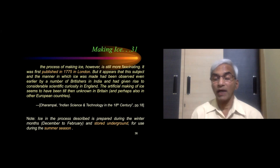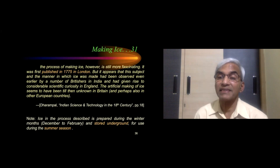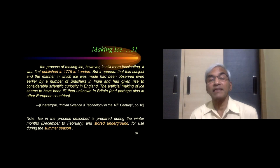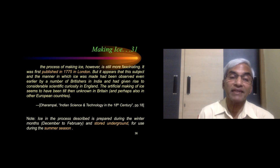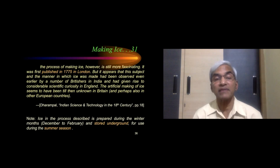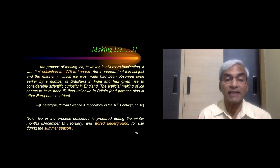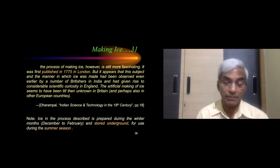About the process of making ice — which is still more fascinating — it was first published in 1775 in London, but it appears that this subject had been observed even earlier by a number of Britishers in India and had given rise to considerable scientific curiosity in England. The artificial making of ice seems to have been till then unknown in Britain.